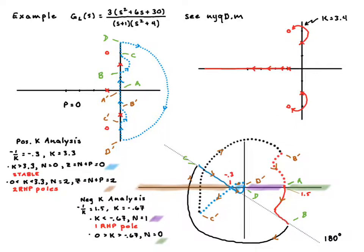And then for small magnitude values of K, so K from negative 0.67 to 0, we have no encirclements, right? Because if I'm out here somewhere, I can scoot past that goofy 180 degree stuff here and here. So I have no encirclements and the crazy thing is stable.